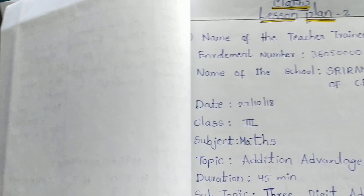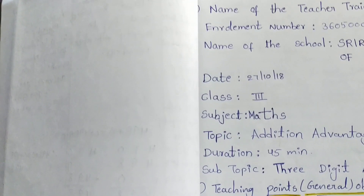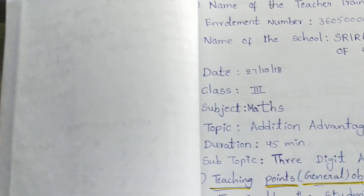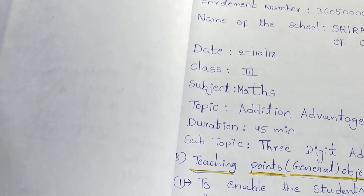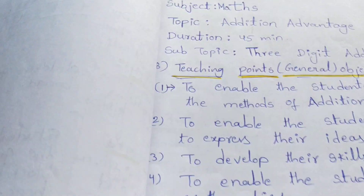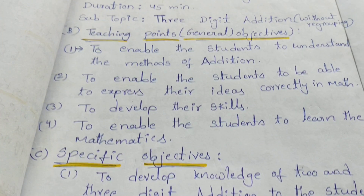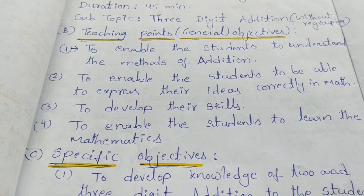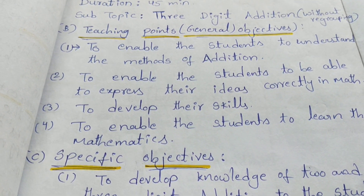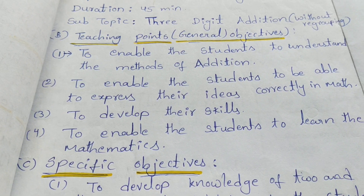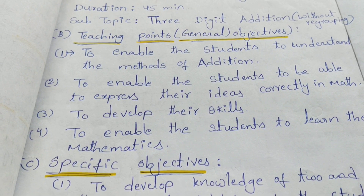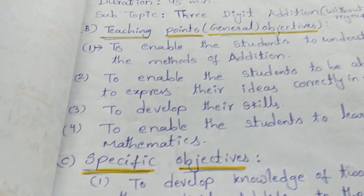Math lesson plan 2, topic is addition — the teaching points and general objectives. The subtopic is three-digit addition without regrouping.